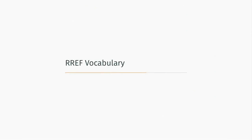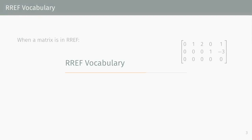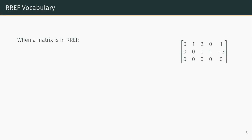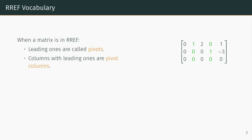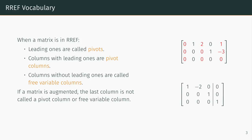We will now discuss some terms associated with a matrix in reduced row echelon form. When a matrix is in reduced row echelon form, leading ones are called pivots, columns with leading ones are called pivot columns, and columns without leading ones are called free variable columns. However, if you are talking about an augmented matrix, the augmented column is not called a pivot column or a free variable column, even if, strictly speaking, it has a leading one.